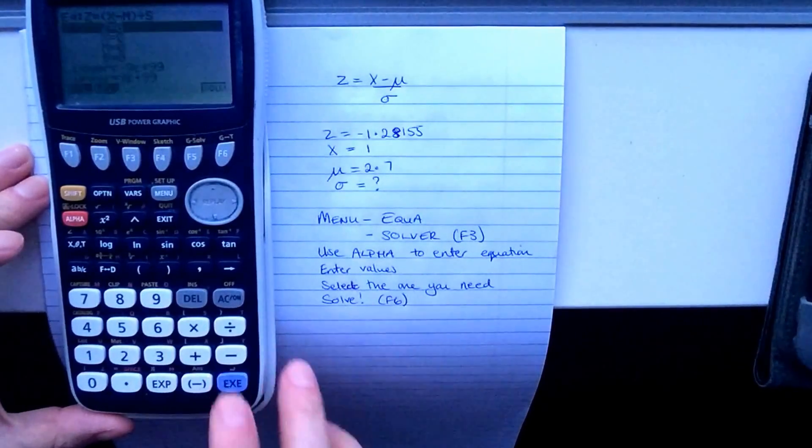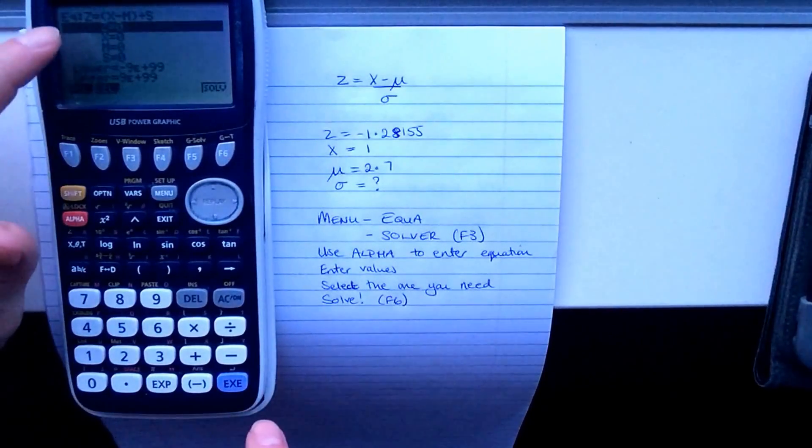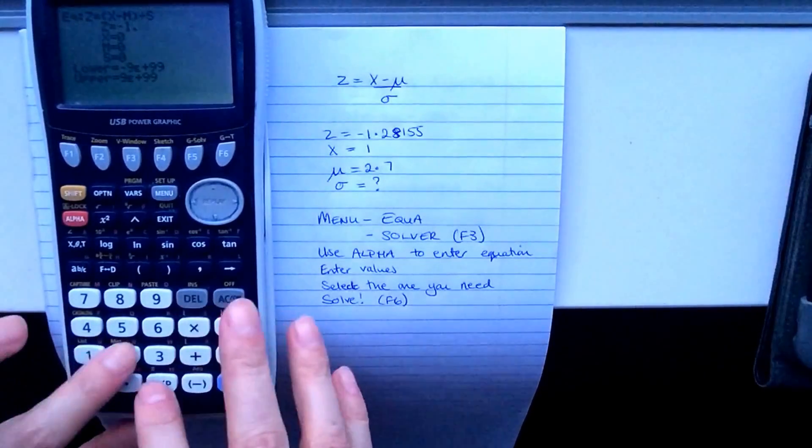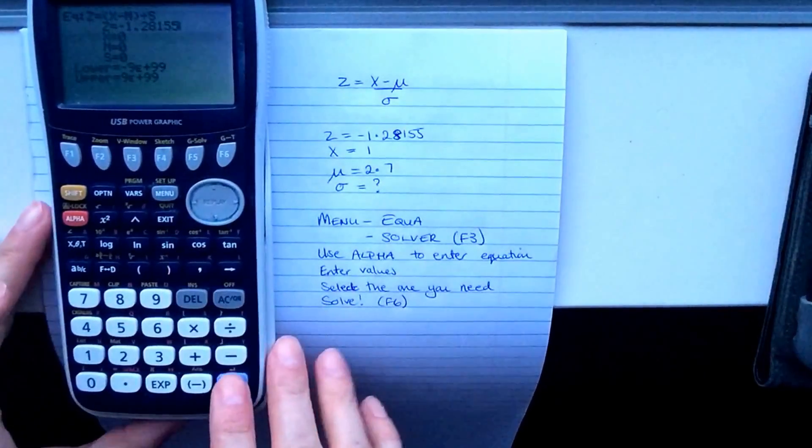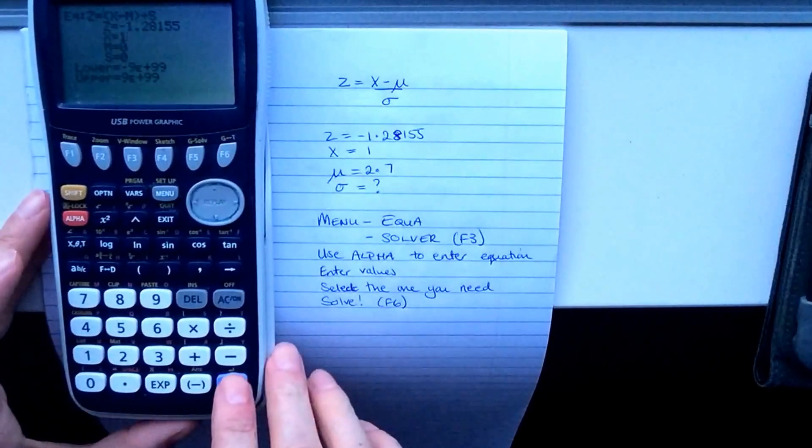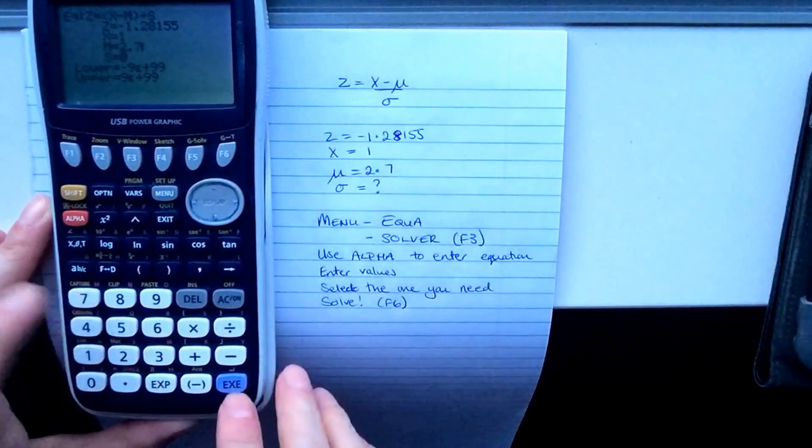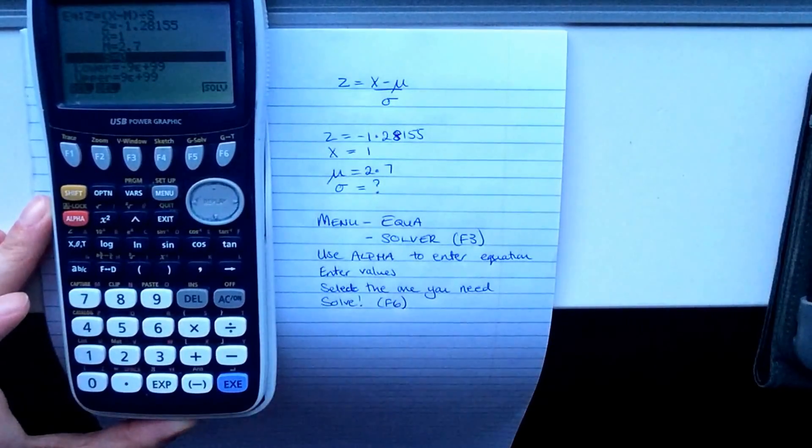So that's our equation. Now we put in all the values that we do know, so we know Z is minus 1.28155, X is 1, the mean is 2.7, and we're working out the standard deviation, so that's the one we don't know.